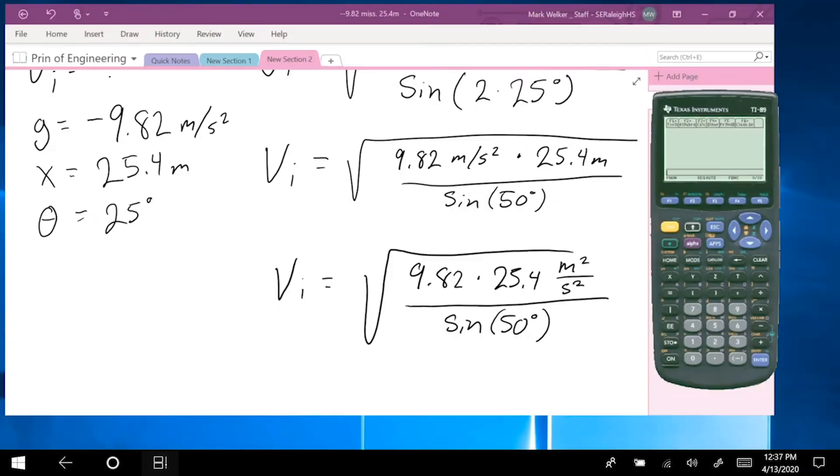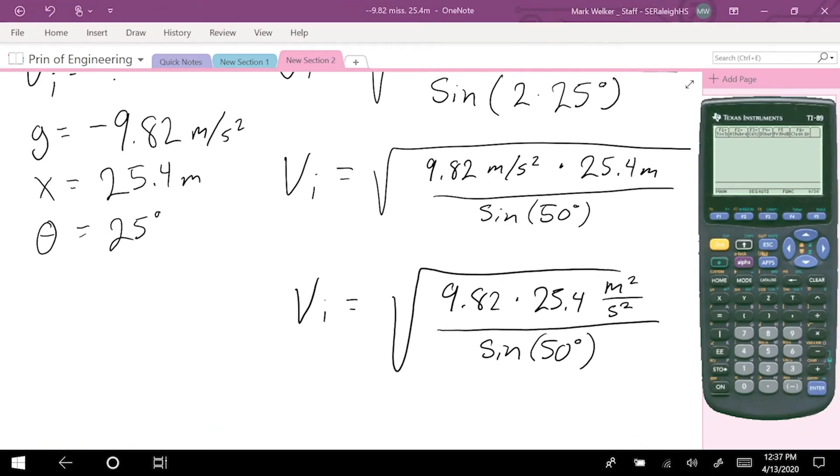At this point, we'll go ahead and break out a calculator. In this case, we know that we're looking for the square root of 9.82 times 25.4 meters divided by the sine of 50 degrees. Now, do make sure that you've checked your mode and that you're actually dealing with degrees, not radians. But since we're good, we can go ahead and run the formula.